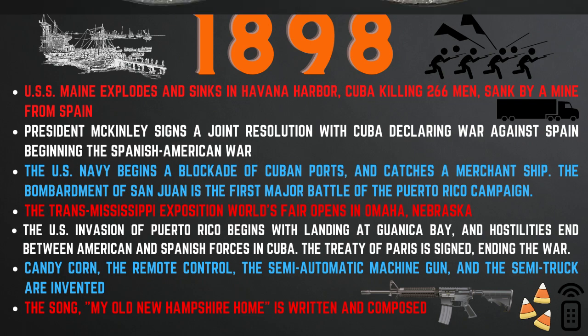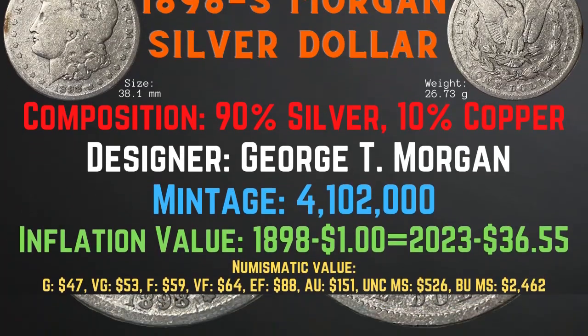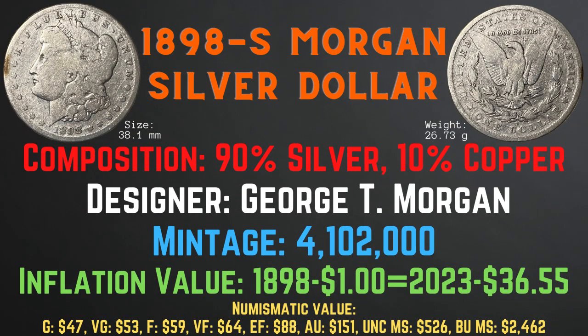Now let's take a look at the 1898-S Morgan silver dollar. It was minted in San Francisco and has a size of 38.1 millimeters and a weight of 26.73 grams. Its composition is 90% silver and 10% copper. Its designer is George T. Morgan. Its mintage is 4,102,000. Its inflationary value for the year 1898 is $36.55. The numismatic values range from $47 in good condition to $2,462 in brilliant uncirculated mint state condition.